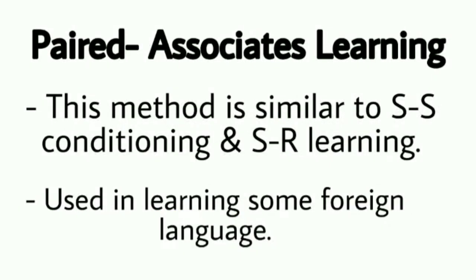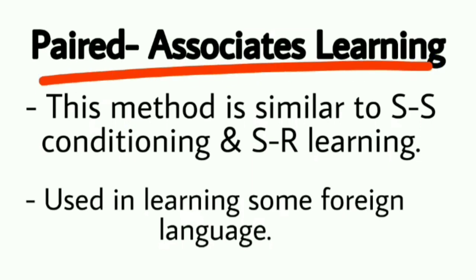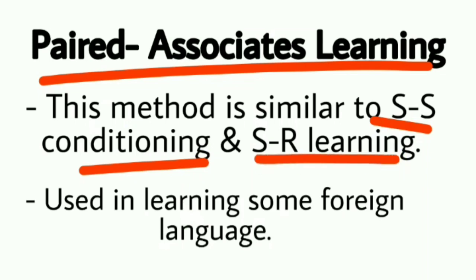Sabse pehla method hai paired associates learning. Ye method S-S conditioning aur S-R learning ke jaisa hai — Pavlov ki conditioning jaisi — jahan stimulus dikhane par response milta hai. Paired associates learning bhi similar hai, lekin yahan ye verbally batai hui hai, matlab bolkar learning hoti hai.